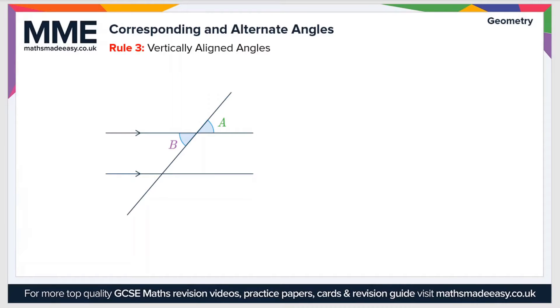Moving on to rule number three, that is vertically aligned angles. These are angles that are opposite each other when two lines meet. Once again the rule is that vertically aligned angles are the same. So in this case A equals B.